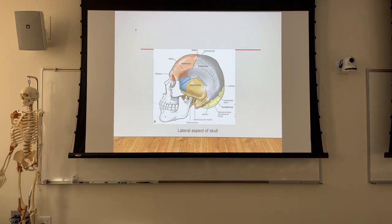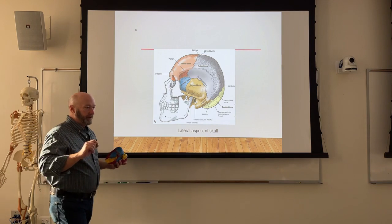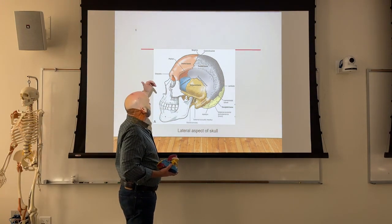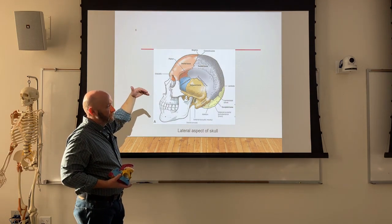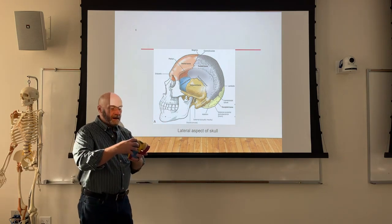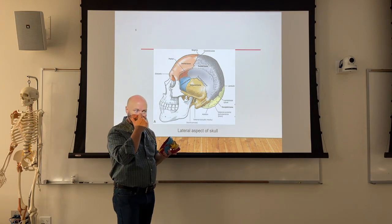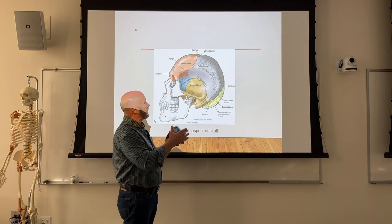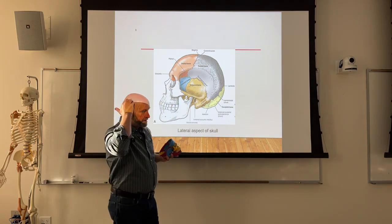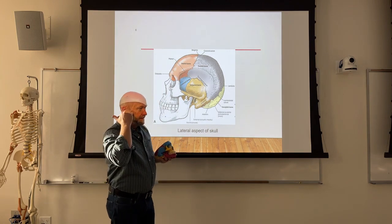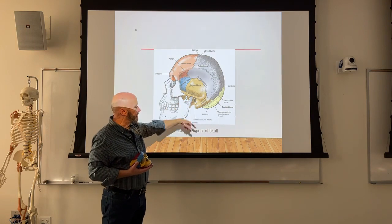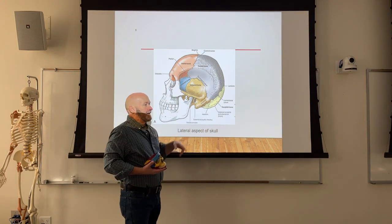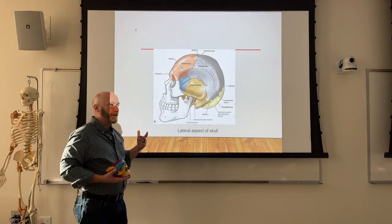The frontal bone from the side has a lot of points of interest and sutures you need to know. The glabella is the knot above the bridge of your nose. You've got the frontal bone up front, the parietal bone as the upper portion of the side of the skull, and the temporal bone — where your ear hole is — referred to as the external acoustic meatus or external auditory meatus, interchangeable.